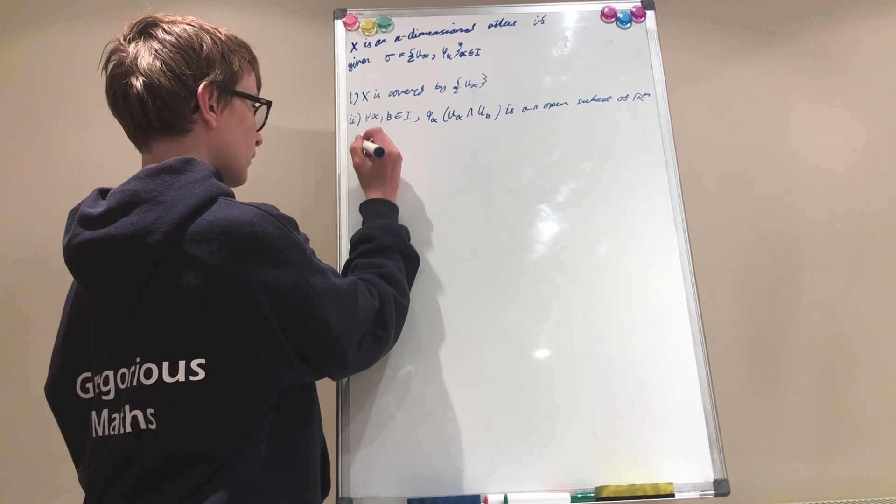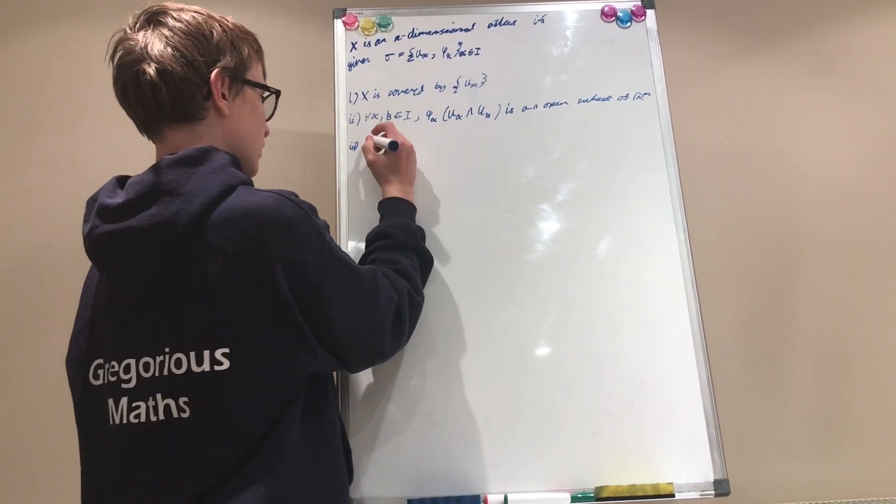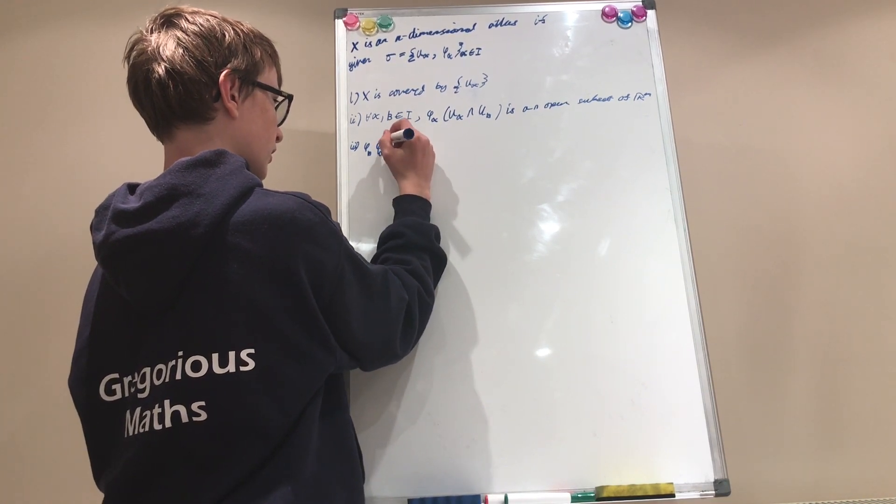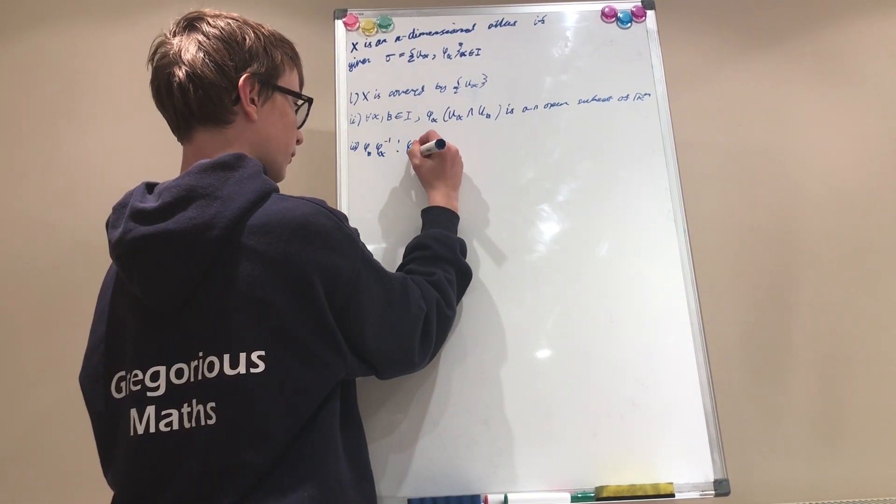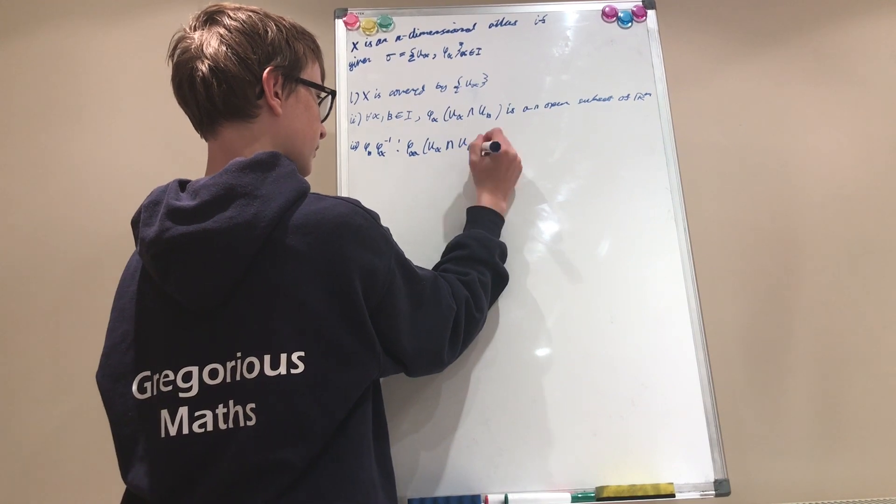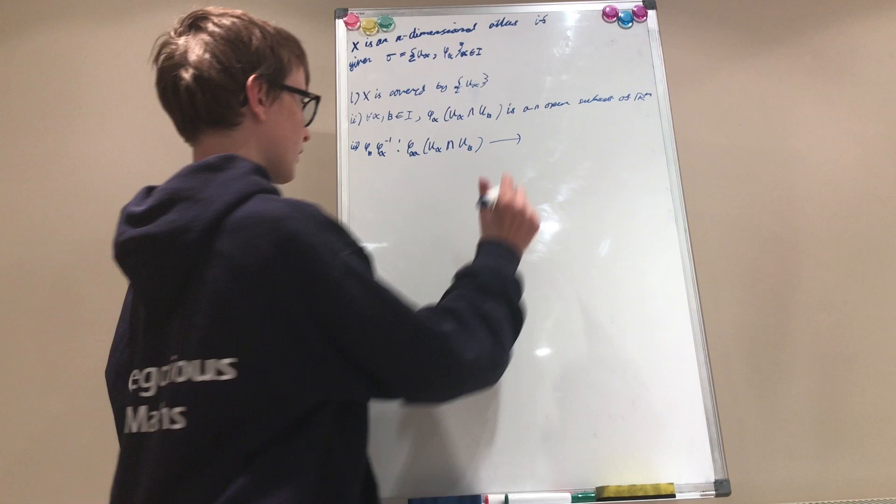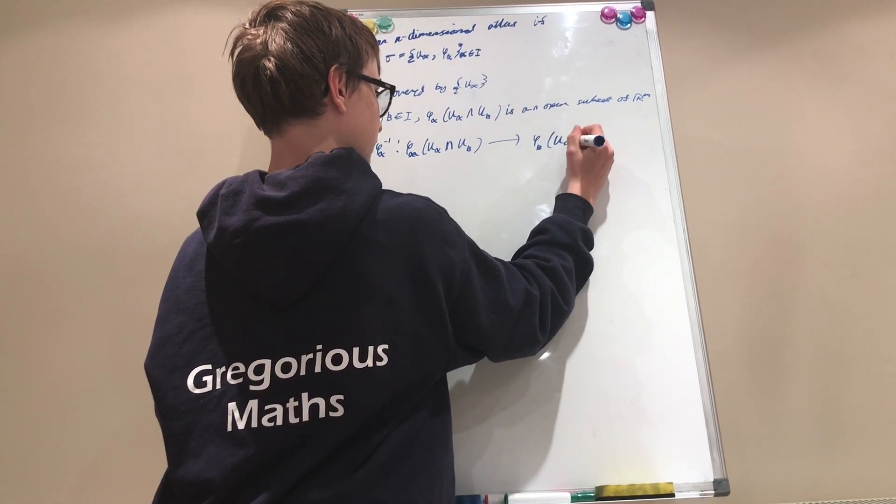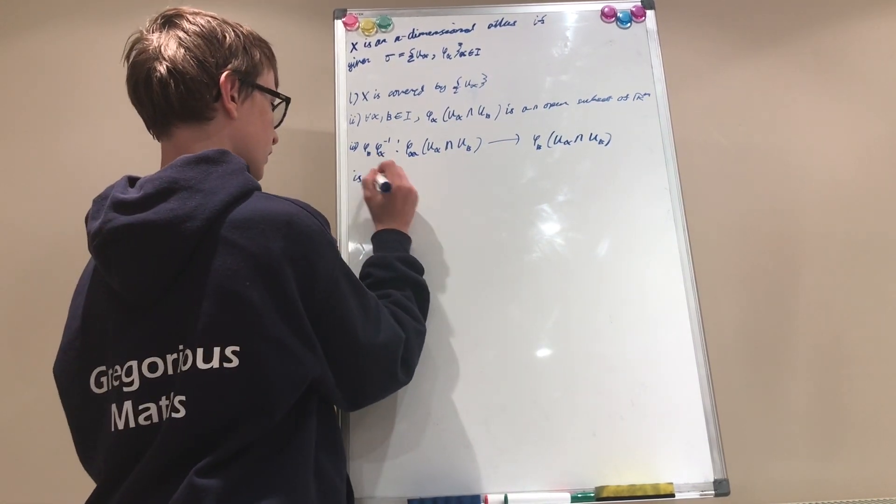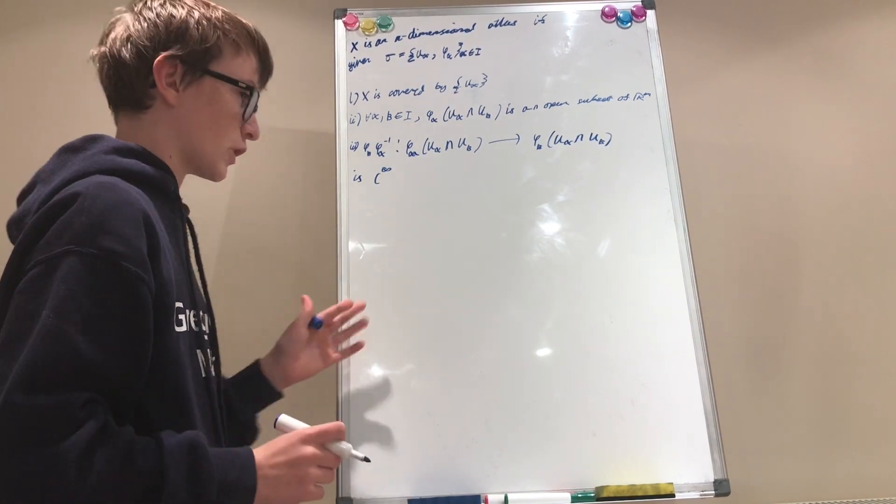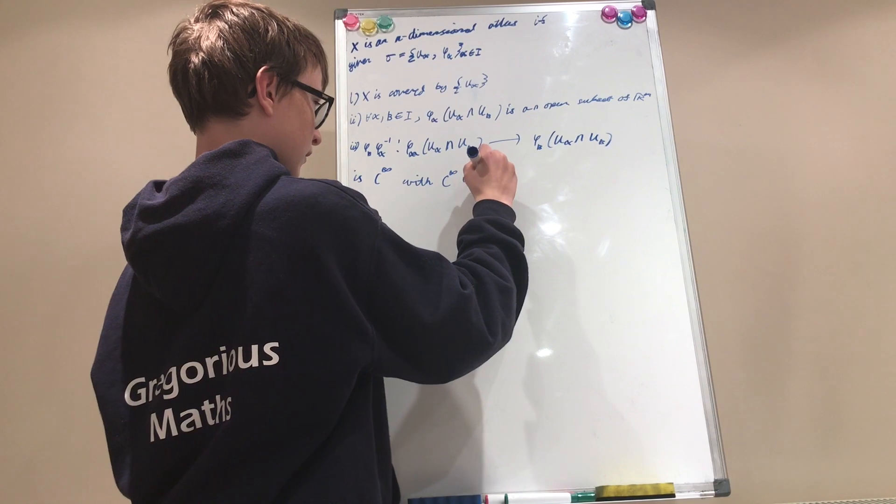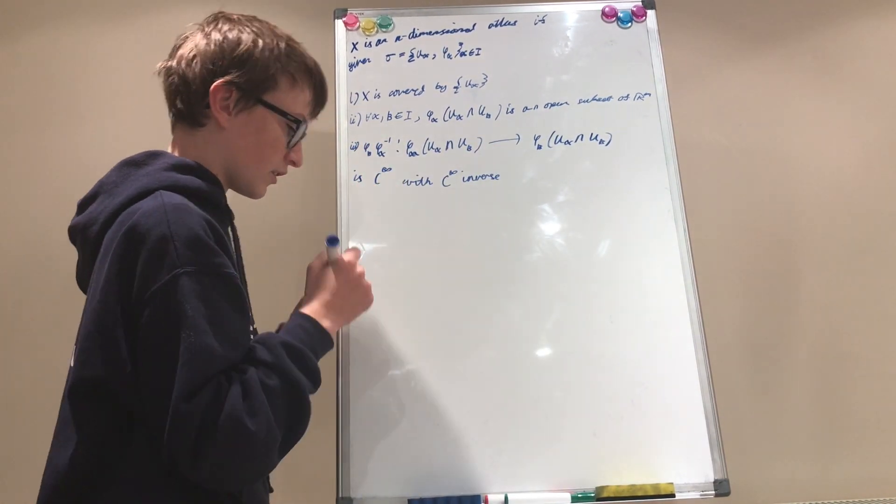And number three is that, given the map phi sub beta, which takes you from phi sub alpha of U sub alpha intersect U sub beta, and it outputs phi sub beta of U sub alpha intersect U sub beta. Okay. Is C infinity. Okay. And what this means, it's infinitely differentiable with C infinity inverse. And this is the definition for an atlas.